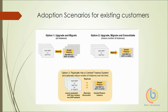The third option is 'replicate into central finance system.' Here, with three different environments — which can represent SAP ERP, SAP R3, or any other third-party accounting tool or ERP — there is no upgrade or migration. Instead, data is replicated into the S4HANA Finance system with the help of the central finance system, which is a separate solution introduced by SAP alongside S4HANA Finance.